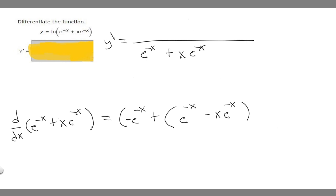Putting it all together in the numerator, we get minus e to the minus x plus e to the minus x minus x·e to the minus x. That is the answer to this question.